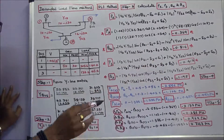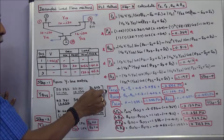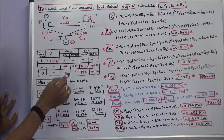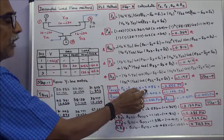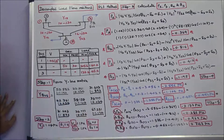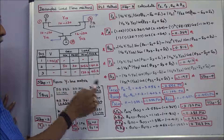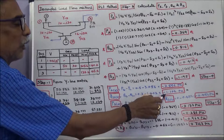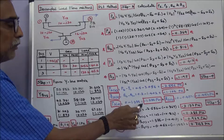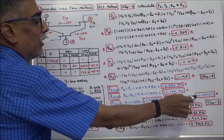Step 4: Calculate the specified real and reactive power. P2 specified equals P2 generation minus load. Generation is 50 MW, MVA base is 100, so 50/100 = 0.5 minus 3.056, giving P2 specified = -2.556 per unit. Q2 specified equals 30/100 minus 1.402 = -1.102 per unit. P3 specified equals 0 minus 1.386 = -1.386 per unit. Q3 specified equals 0 minus 0.452 = -0.452 per unit.